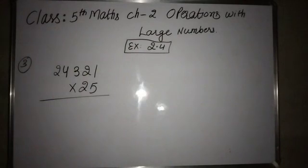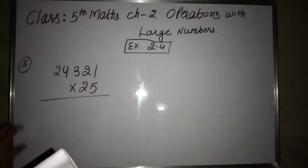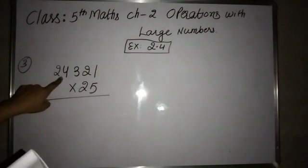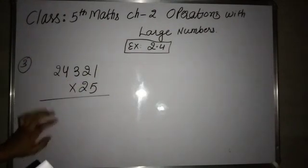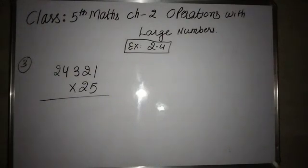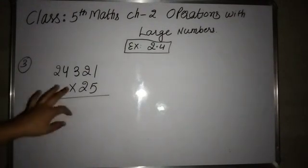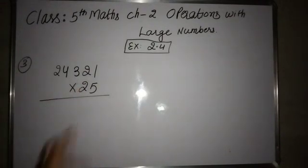Next is the third sum. The statement says: find 24,321 added to itself 25 times. This means we will multiply 24,321 by 25.